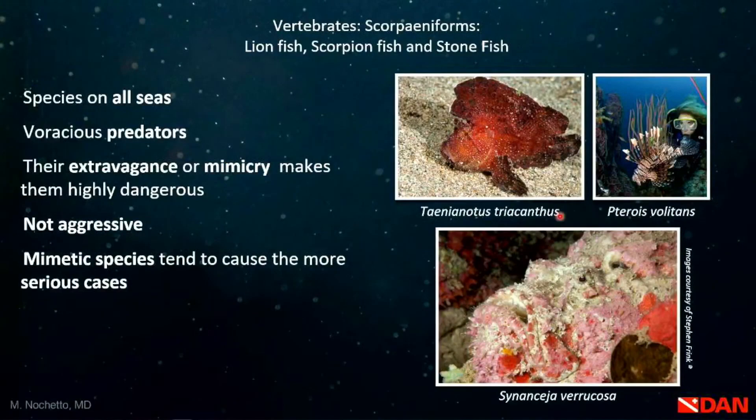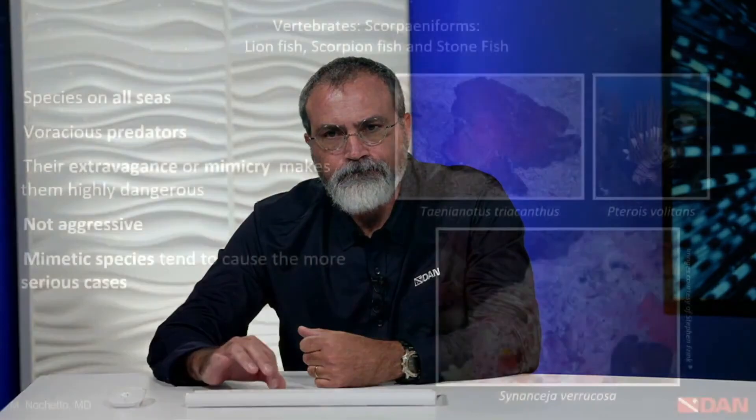There are scorpioniforms in all oceans, even the Arctic and Antarctic. They are voracious predators, eating fish usually at night. The flamboyant species have no fear of predators and won't move until you swim over them. The mimetic species are so sure you won't see them that they won't move either — incidents happen when you put your hands on the reef, step on it, or walk on a rocky beach. They're not aggressive and never attack people; most lionfish incidents happen when people are hunting and manipulating them.